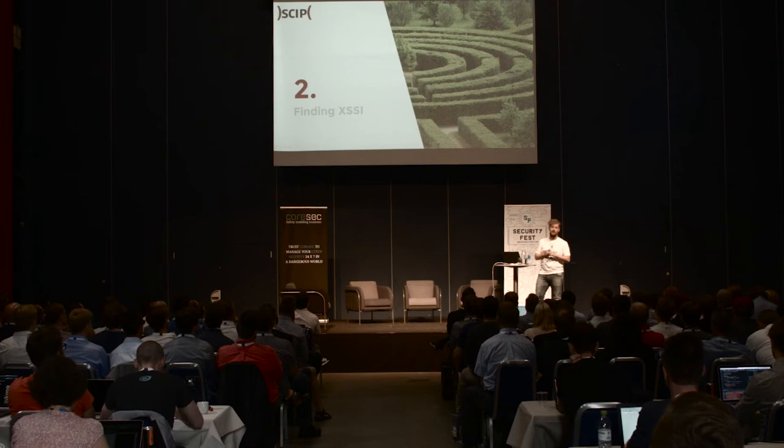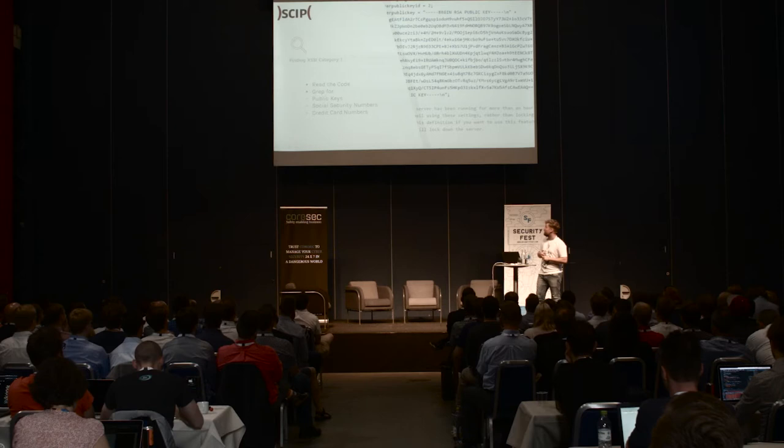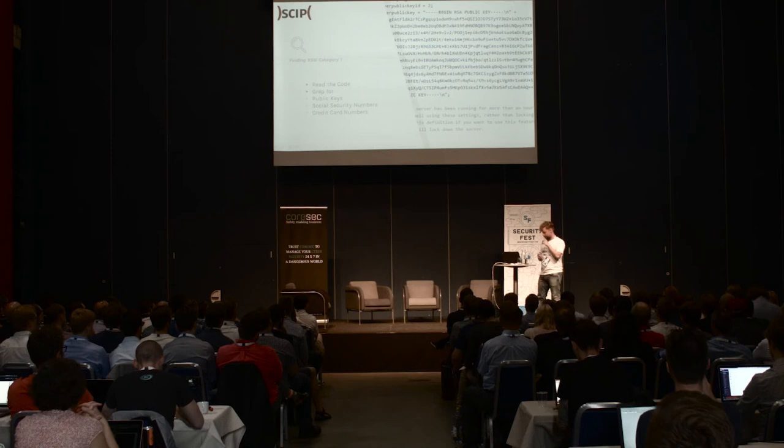To find category number one cross-site script inclusion, there is really no way around it — you will have to read the code. You can grep for private keys, social security numbers, and credit card numbers. Burp Suite will actually help on those already; if it thinks there is sensitive data inside a script file, it will flag it. So now that you know about cross-site script inclusion, you can take that data from all the users.